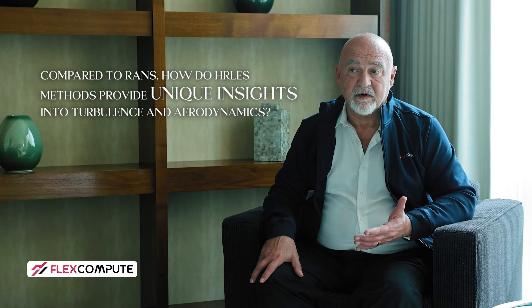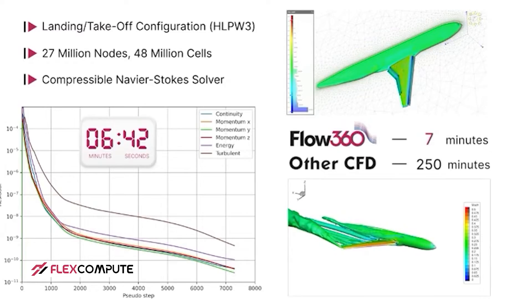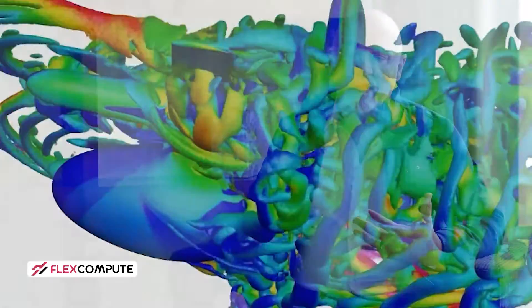For these turbulence-resolving simulations, I want a grid that is fixed in time but that we adapt based on what we've learned from the early part of the simulation. FlexCompute is offering both. Unsteady simulations will give you vibration and noise, but even for the steady part of the flow — the average lift and drag of the airplane — for massively separated flows, they will give you better answers than steady modeling.